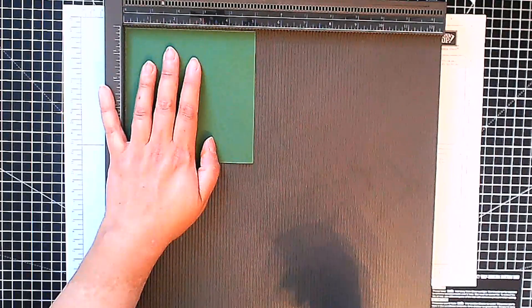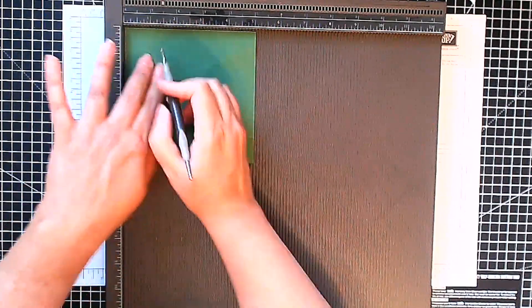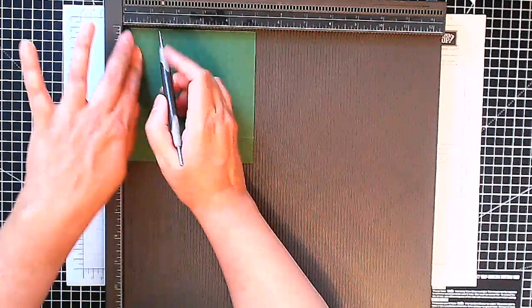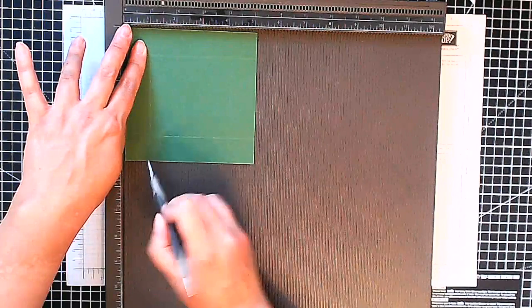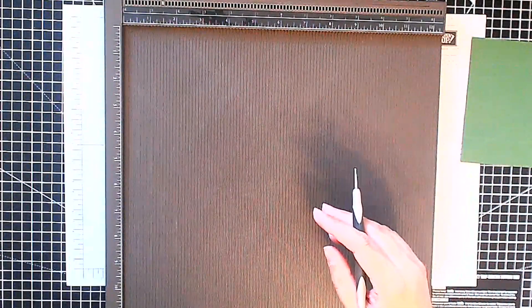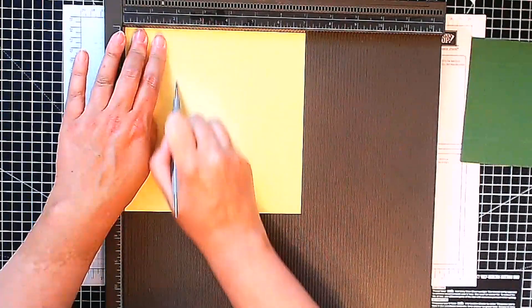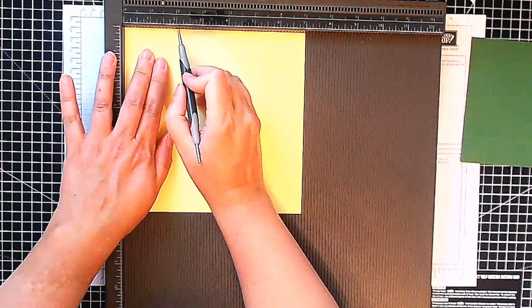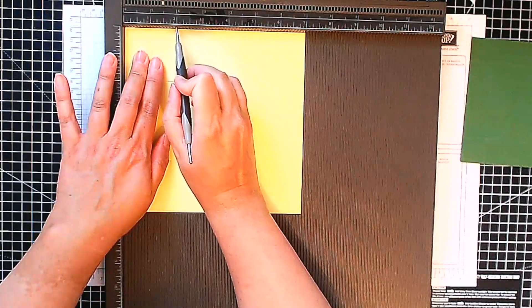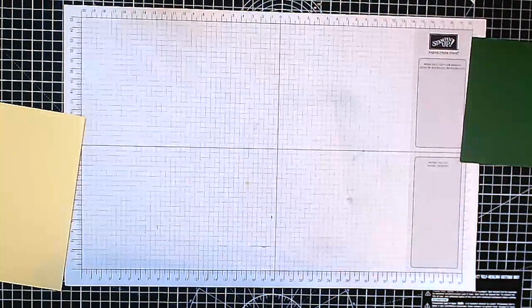Okay, there we go, and then I've got for my base, this piece measures seven by seven and we're going to score two inches on all sides. Two inches, twist, two inches, and two inches. Okay, and that's all the scoring we need to do.